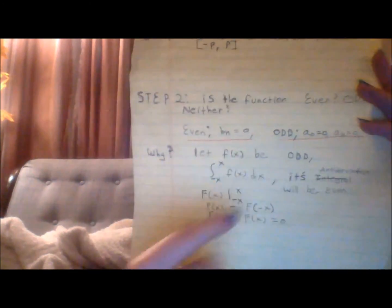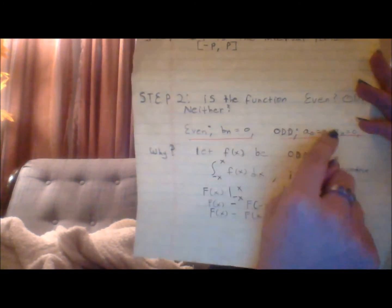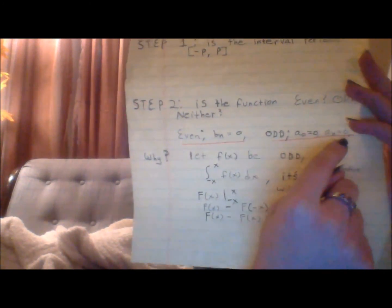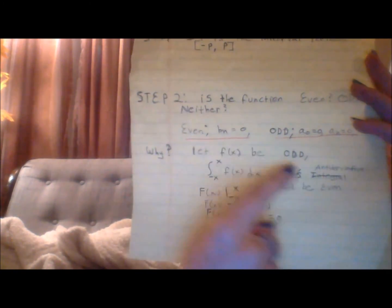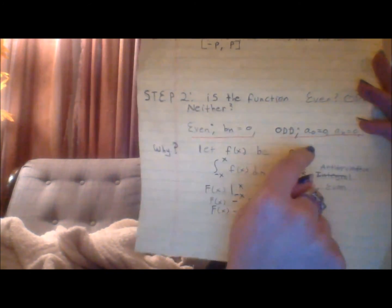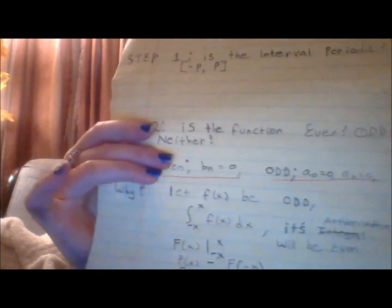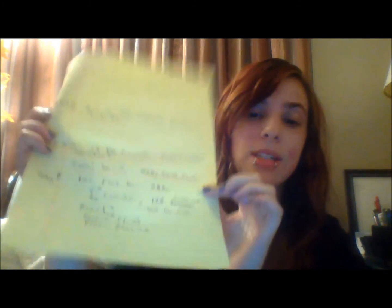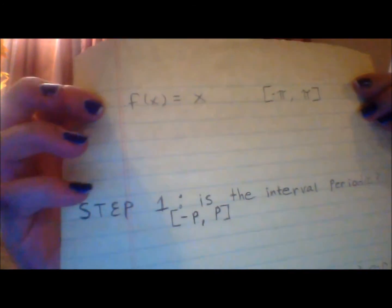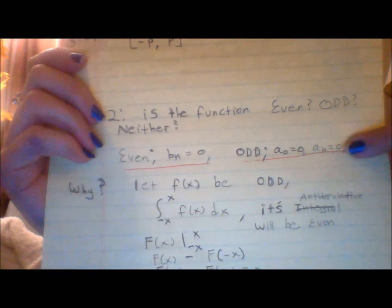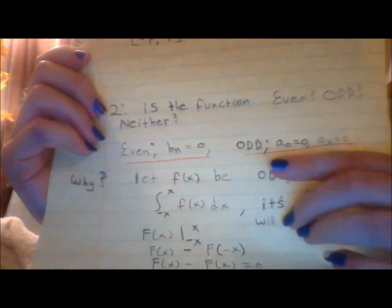And so that is why these are true. That's basically why this part right here is true, that a sub n is 0. The same exact principle is why these are true. So memorizing that makes it a lot easier to just recognize whether or not the function is even, odd, or neither. Our function is odd, so we know that a naught and a sub n are 0.